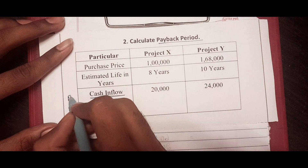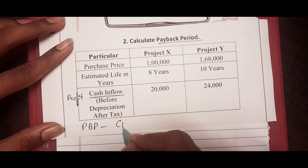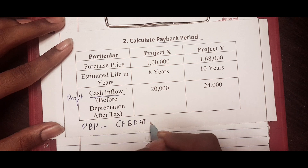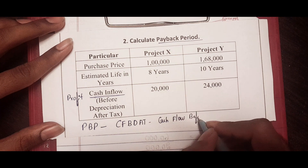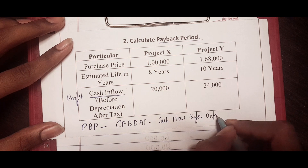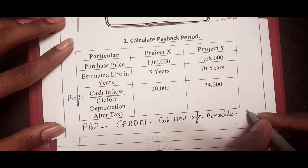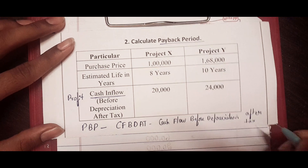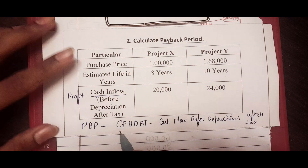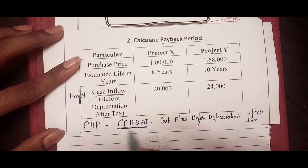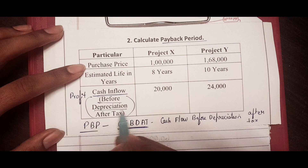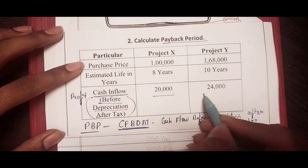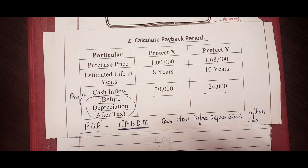The cash inflow — also called profit — should always be CFBDAT. CFBDAT is nothing but cash flow before depreciation after tax. In some problems they would have given figures after depreciation after tax, and in that case we have to convert it, because for payback period we require CFBDAT only. In this question they have given CFBDAT directly: Project X is 20,000 and Project Y is 24,000.